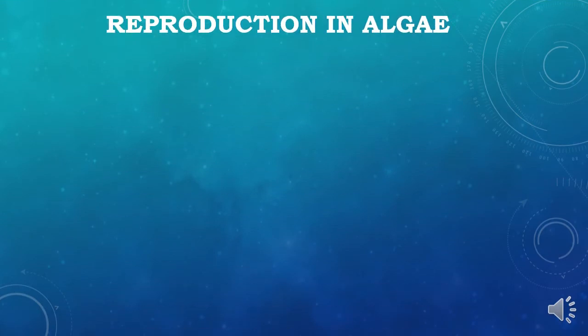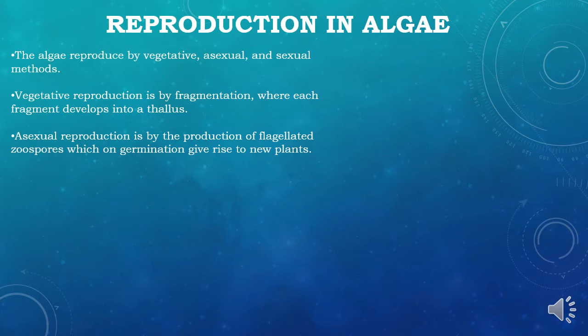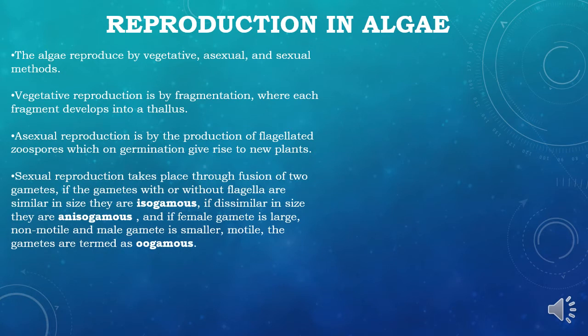Coming to reproduction in algae — reproduction takes place by vegetative, asexual, and sexual methods. In vegetative reproduction, it is by fragmentation, where each fragment develops into a thallus. The body cuts into fragments and each fragment is capable of growing into a new plant; this happens in Spirogyra, which is a filamentous alga. Asexual reproduction is by the production of flagellated zoospores, which on germination give rise to new plants.